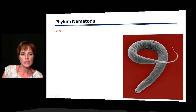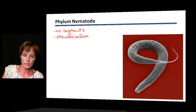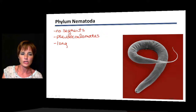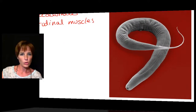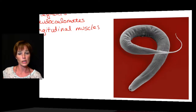Nematodes have no segments at all, and they are pseudocoelomates. A distinctive feature is their longitudinal muscles — you can see lines running down the whole length of the worm. These longitudinal muscles produce a thrashing movement when the worms move, which looks like a wild, undirected motion.